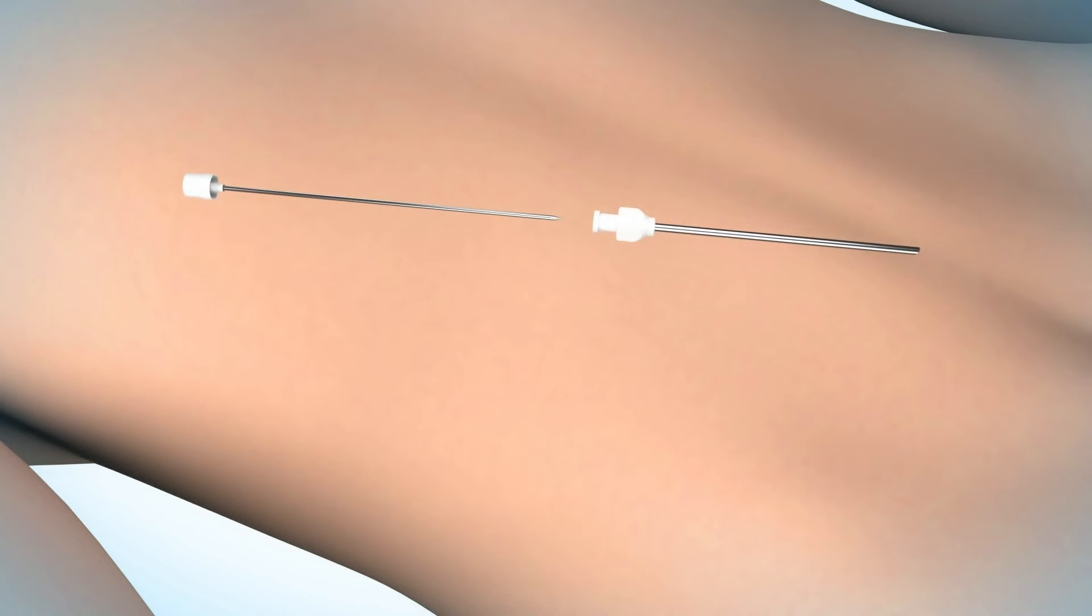With the patient prone, the disc to be treated is located using a posterolateral approach with a 17-gauge needle under fluoroscopic visualization.